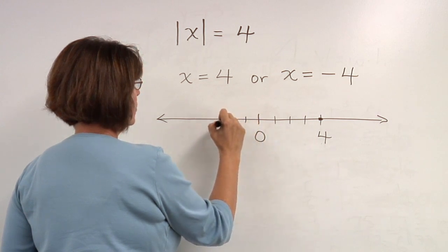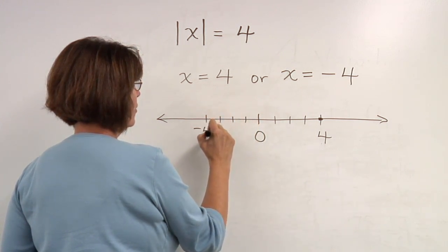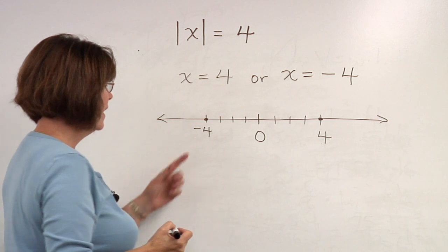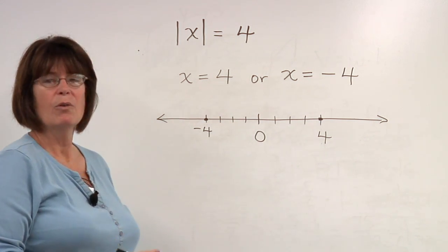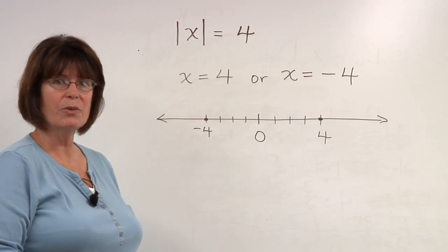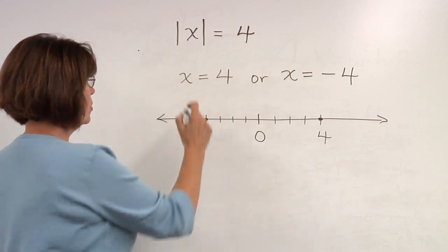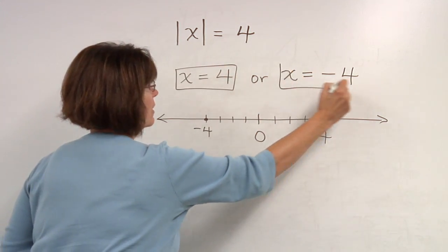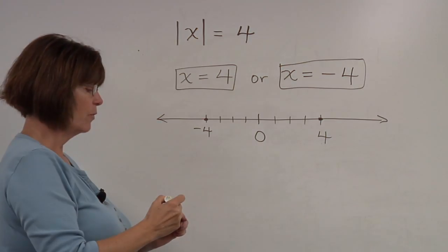or 1, 2, 3, 4 units in the other direction at negative 4, this number is also 4 units away from zero. So this equation has two solutions, x equals 4, x equals negative 4.